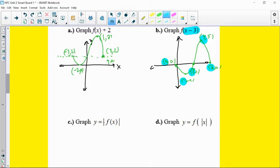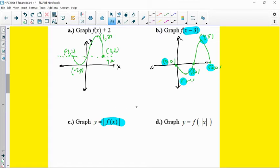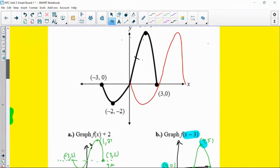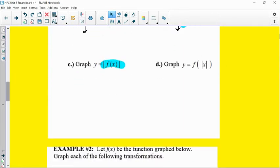So remember, if your transformation is outside, like absolute value outside f of x, that's affecting the y variables. And so remember, we're only going to behave with positive y values. Y values that are already positive, nothing happens. Y values that are negative will reflect up to their positive counterparts. So as I look at the original function, everything to the right here is already positive above the x-axis. So that's great.